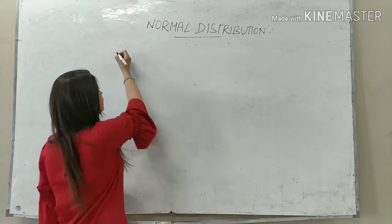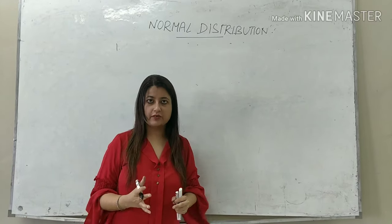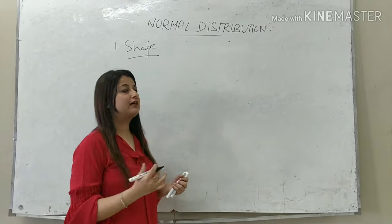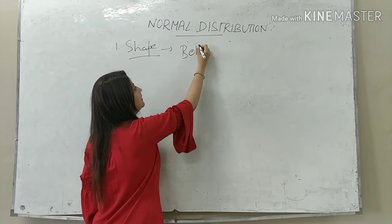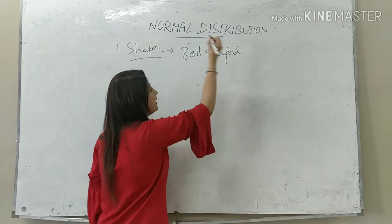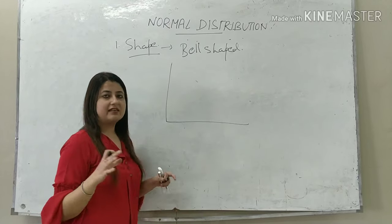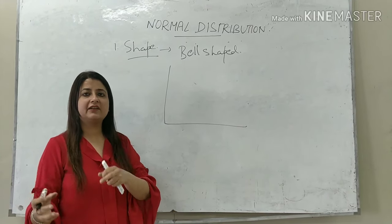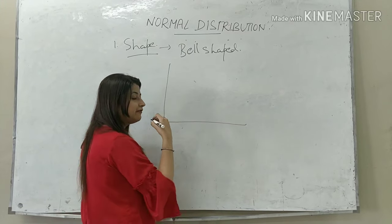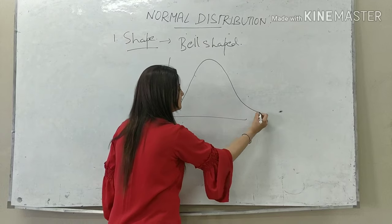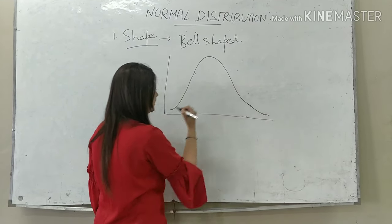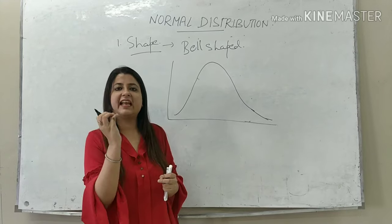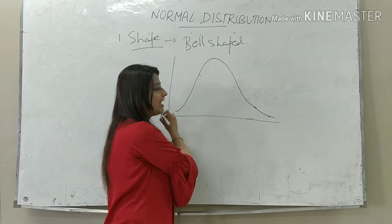Feature number 1 of a Normal Distribution is its shape. The shape of a Normal Distribution is bell-shaped. For example, suppose there is a class of 50 students and we take the weight of students. If the data is normally distributed and you draw a curve, it will come out to be bell-shaped. This means the frequencies taper off very rapidly and smoothly on either side.